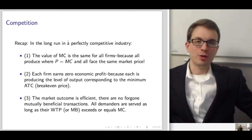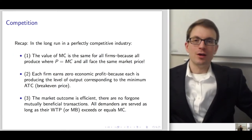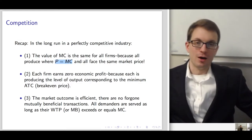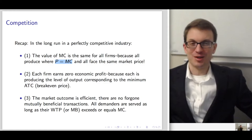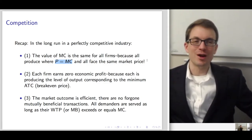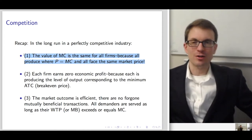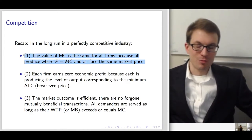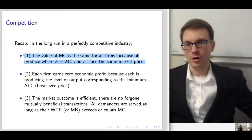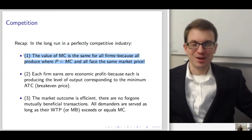In the long run with a perfectly competitive industry, the value of marginal cost is the same for all firms, because all produce where price equals marginal cost and all face the same market price. Therefore marginal cost has to be the same for all firms. All remaining firms in the long run are equally efficient — if some were more efficient, the price isn't at its long-run equilibrium; if some were less efficient, they need to leave the market.